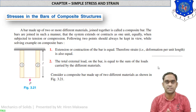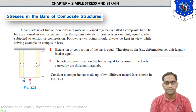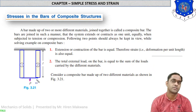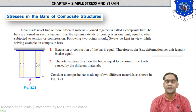Today we will discuss the stresses acting on composite bars and what type of elongations are occurring. Consider a figure in which bar number one and bar number two are connected rigidly, a tensile force P is acting downwards, and both bars are fixed at the ceiling. A bar made of two or more different materials joined together is called a composite bar. The bars are joined such that the system extends or contracts as one unit.